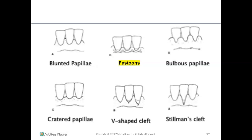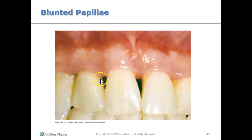Here we see some terminology that you may want to be familiar with. We'll start with blunted papilla. A blunted papilla means the papilla is gone and it's flat — blunted kind of means flat. Here is an example of a blunted papilla: you can see where the papilla is supposed to be, but it has receded or is completely flat.